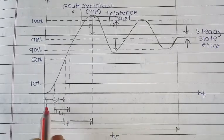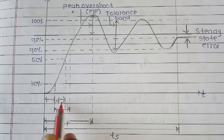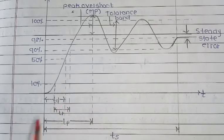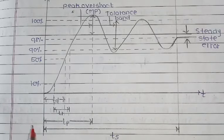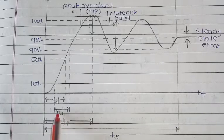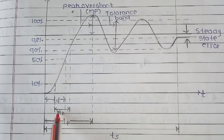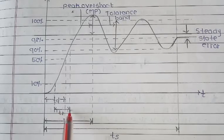The formula for delay time is: Td equals 1 plus 0.7 zeta upon omega-n. Next definition is rise time, that is Tr.